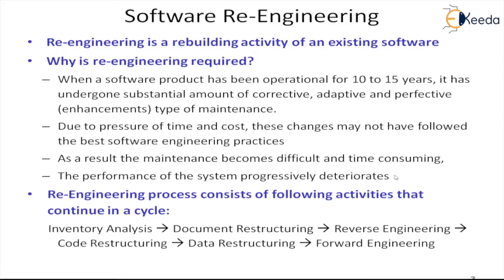That is where something drastic has to be done, and that drastic step is called re-engineering — we break the system and make it again. The objective is that the functionality will remain the same, but the structure and the way modules are designed will change. The engineering part changes, but the functionality and information domain do not.